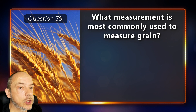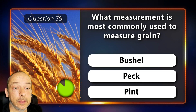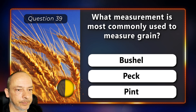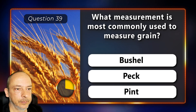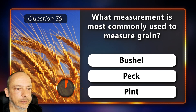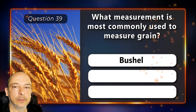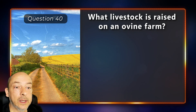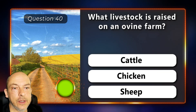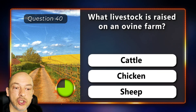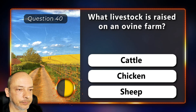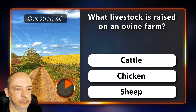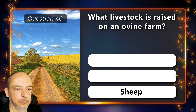What measurement is most commonly used to measure grain — the bushel, the peck, or the pint? The bushel. What livestock is raised on an ovine farm — is it cattle, chicken, or sheep? Sheep.